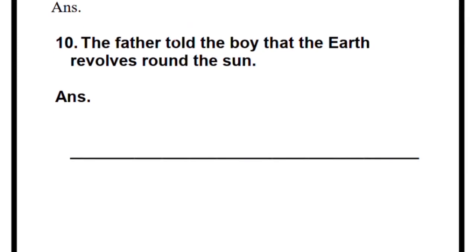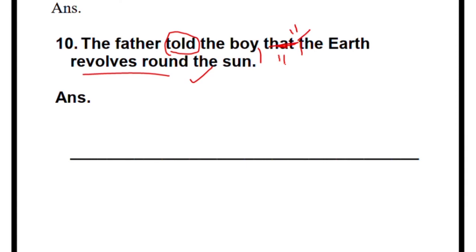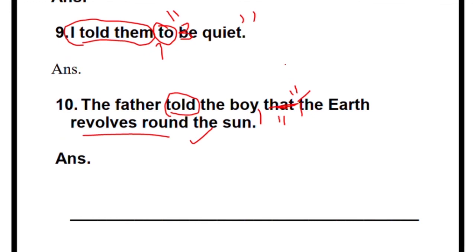The tenth and last one: 'The father told the boy' — write 'The father said to the boy,' add a comma, remove 'that,' open quotes, and start with a capital letter. 'The earth revolves' — will we change it to 'revolved'? No, because it is a universal truth. 'The earth revolves around the sun' remains the same. Close the quotes. The father said to the boy, 'The earth revolves around the sun.'